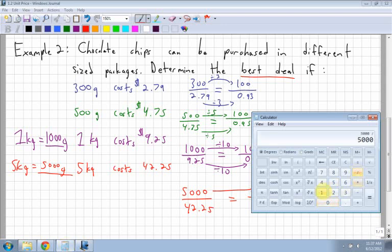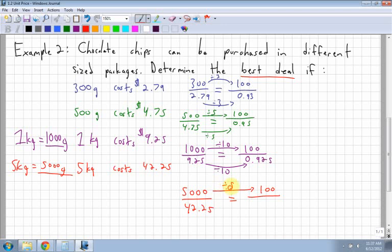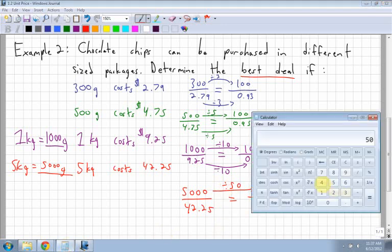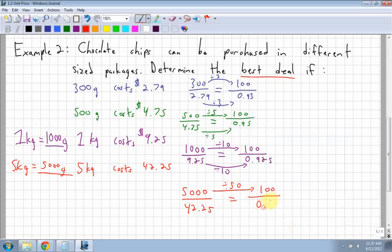So 5,000 divided by 100 is 50. So that means I'm dividing by 50. So I take $42.25 divided by 50 is 0.845. So 0.845. And I divided that one by 50.